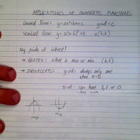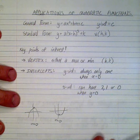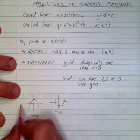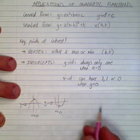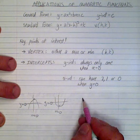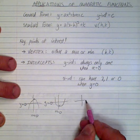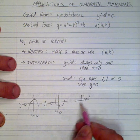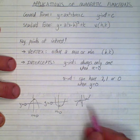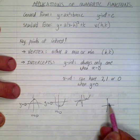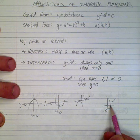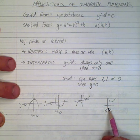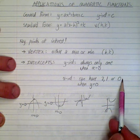The x-intercept is when y is equal to 0. In many cases the parabola crosses twice, but it can cross just once if it bounces on the axis, or it may never cross if the parabola opens up with the vertex above the x-axis, or opens down with the vertex below the x-axis — giving us no x-intercepts.